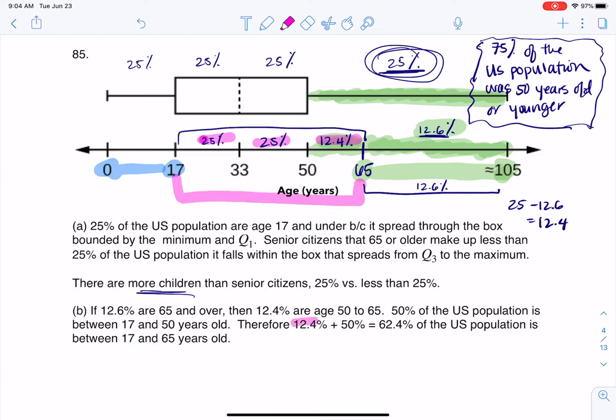So that's where you see me doing 12.4% plus 50%. And so we find out that 62% or 62.4% of the U.S. population is of working age. They're between 17 and 65 years old. All right, thanks so much, everyone. Bye.